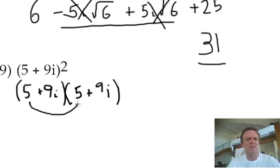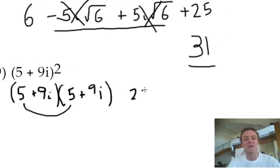What's 5 times 5? It's 25. The outer will be, think of these as x's. 5 times 9x is 45x. Well, 5 times 9i is just 45i. Can't do anything with that, anything fancy. There's no i squared, it's just 45i.